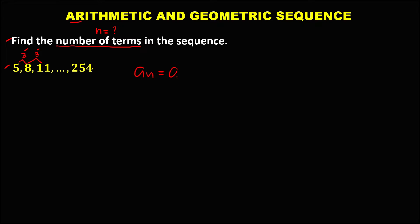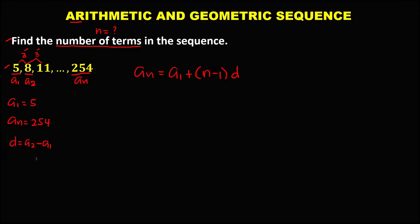The formula is a sub n equals a sub 1, that's the first term, plus the quantity of n minus 1 times the common difference. From the given sequence, the first term a sub 1 is positive 5, a sub n is positive 254, and the common difference is a sub 2 minus a sub 1, which is 8 minus 5, so the common difference is positive 3.